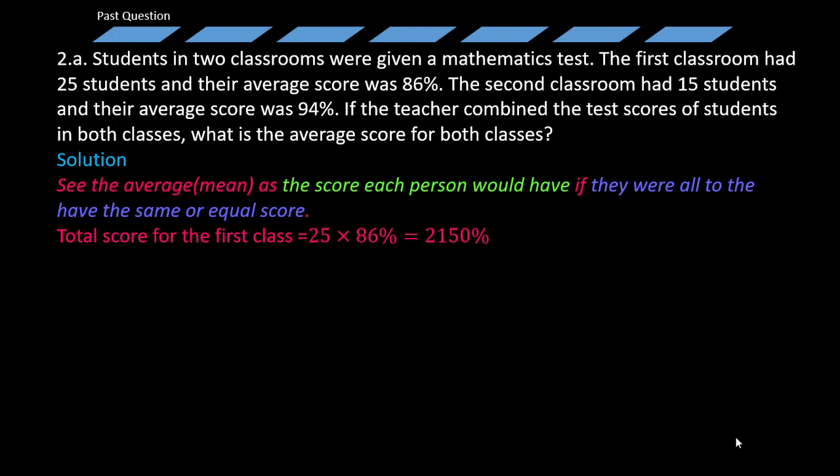Now let's move to the second class. The second class had 15 students and the average score was 94%. Now what does the 94% mean? That means if each student or each person was to have the same score, each one would have gotten 94% - that is what is meant by average. So thus the total score for the second class would have been 15 times 94%, which will equal 1410%. Please, when going to write such examinations, don't forget to go with your calculators, and remember foreign materials like mobile phones are not allowed.